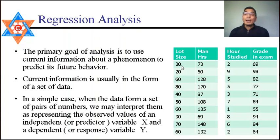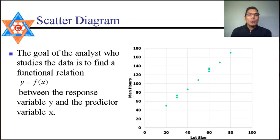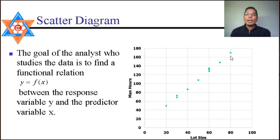The previous data is shown in the form of a scatter diagram to find out the relationship between the two variables. The dependent variable is presented on the y-axis and the independent variable on the x-axis. The functional relationship y = f(x) is observed. If the scatter shows a straight-line type of pattern, we can fit a linear regression.